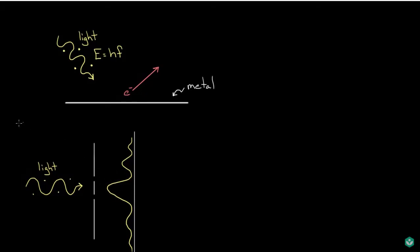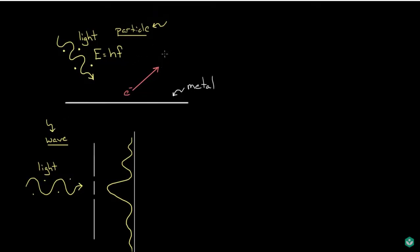So this experiment showed that light behaved like a wave, but the photoelectric effect showed that light behaved more like a particle. This kept happening — different experiments showed particle-like behavior or wave-like behavior for light. Finally, physicists resigned to the fact that light can seemingly have particle-like properties and wave-like properties depending on the experiment being conducted.